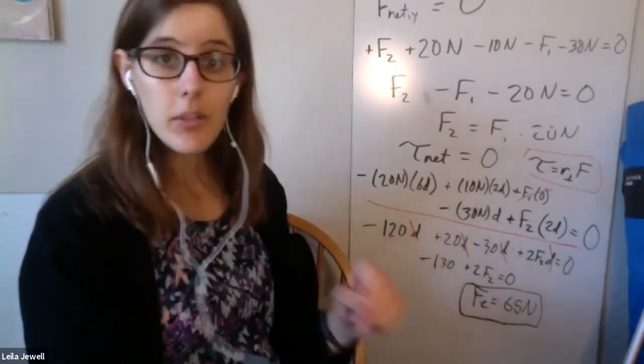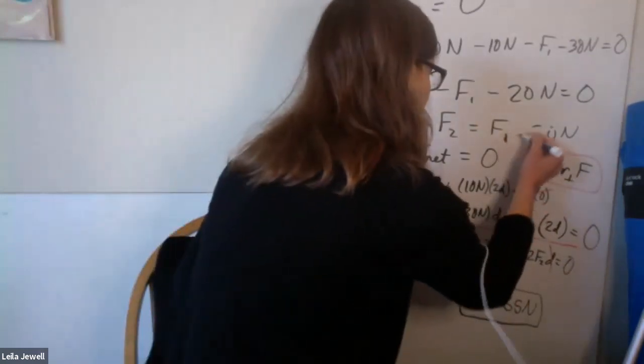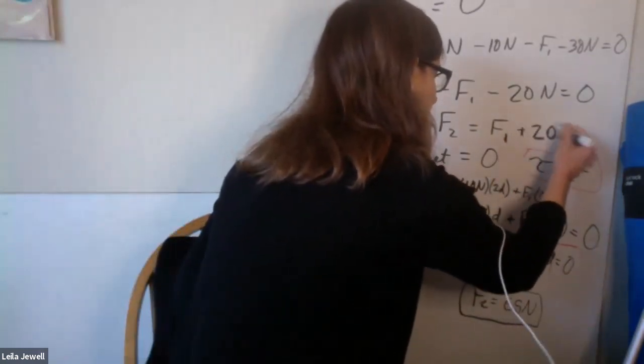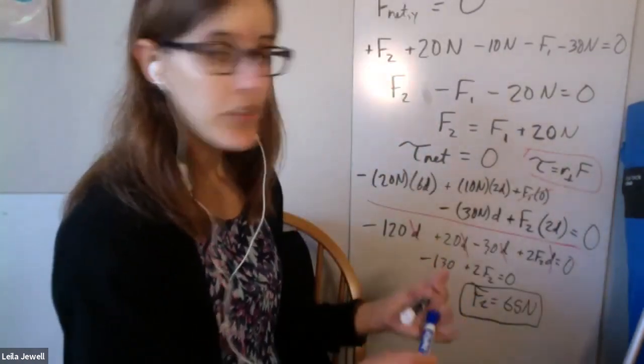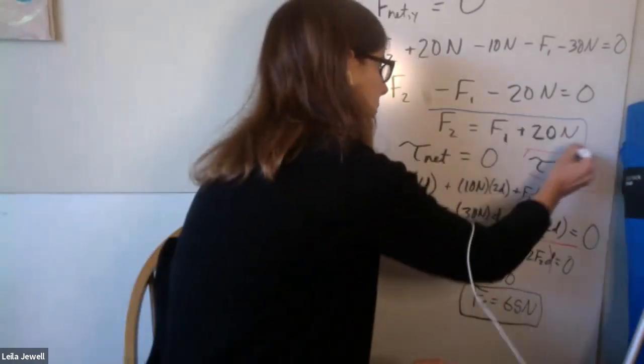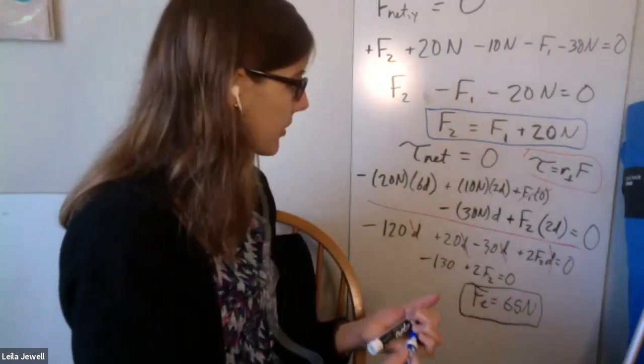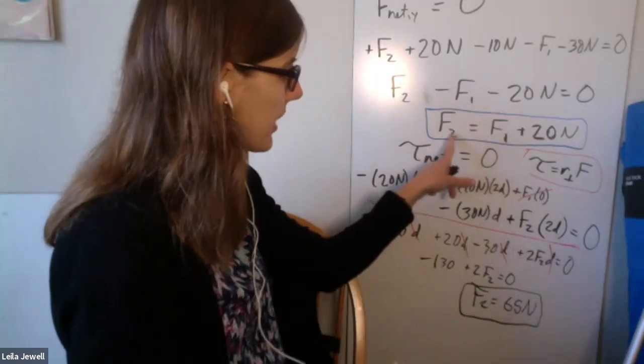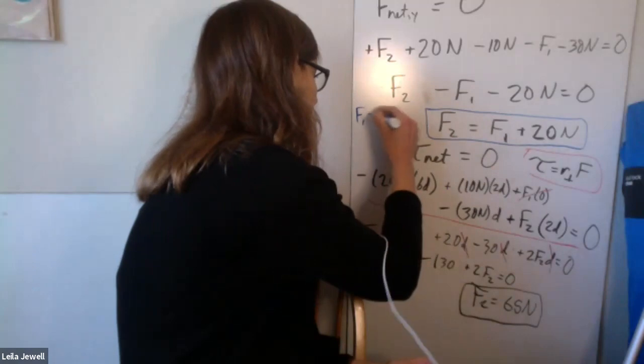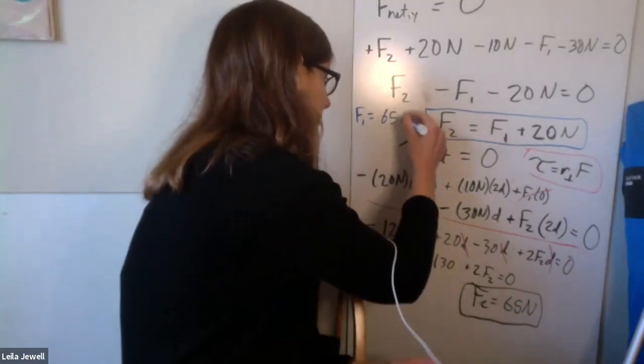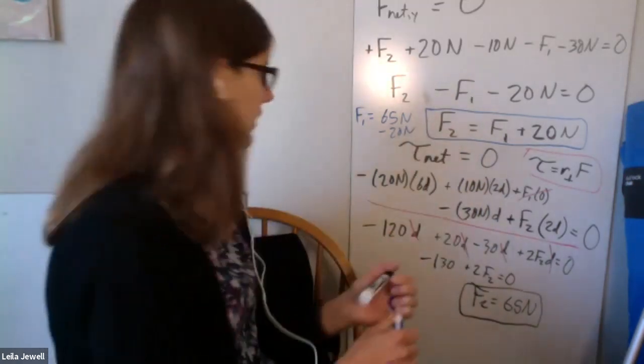Once we know this, now we can go back to our balance of forces equation, which I started to erase here. What we previously got is that f2 is just equal to f1 plus 20 newtons. And that equation didn't take very much work to get to. So f1 is just going to be f2 minus 20 newtons. f1 is equal to 65 newtons minus 20 newtons. And so that will just come to 45 newtons.